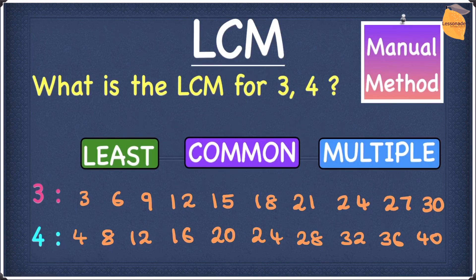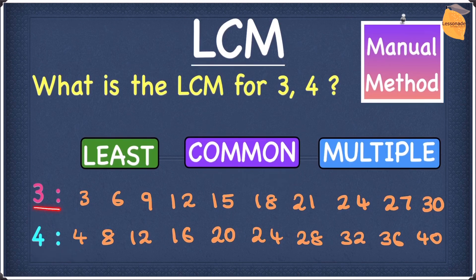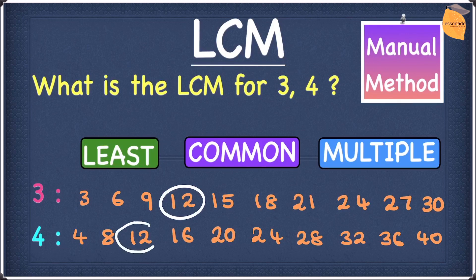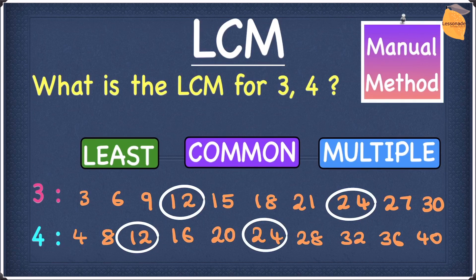Our next step is to find the common multiples for both lists — for three and for four. Now let's start by scanning through both lists. The first number appearing on both lists is twelve. Twelve appears on three and on four. Continuing to scan, the next number appearing on both lists is twenty-four. Twenty-four appears on three and again on four.